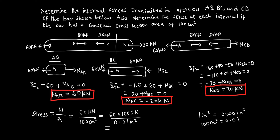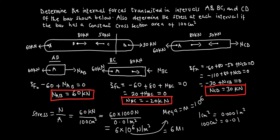Simplifying this gives 6 times 10 to the power 6 newtons per meter squared. Since 10 to the power 6 is mega, you can rewrite this answer as 6 mega newtons per meter squared, or 6 megapascals, because stress is measured in pascals. Looking at the direction of the normal reaction — it is moving away from the cut point, so you consider it to be in tension.